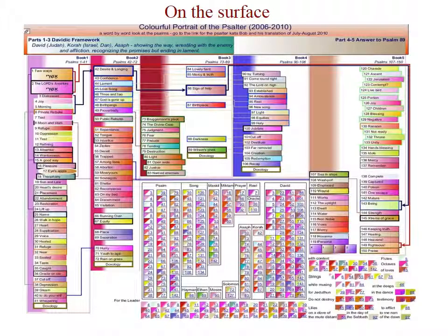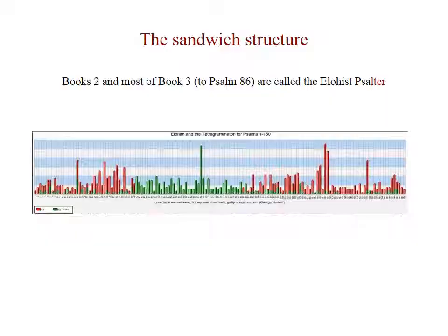Here's the surface structure, and I'm grateful to Anthony McCauley Associates for the diagramming surface that is part of GX Leaf. This is a ridiculously complex view of the Psalter — I did dozens of others until I began to see the whole using the acrostics. This sandwich structure — Books 2 and most of Book 3, to Psalm 86 — is called the Elohist Psalter.